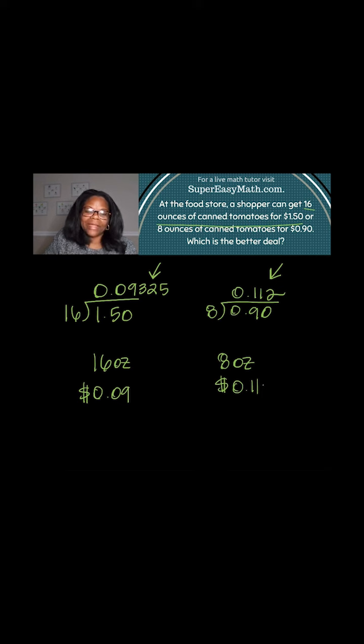you're paying about $0.11 per ounce. So in order to answer the question, which asks which is a better deal, you know that the can that allows you to pay less per ounce is the better deal. So in this case, buying the 16 ounce can is a better deal than buying the 8 ounce can.